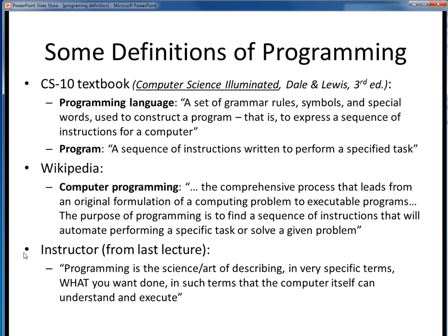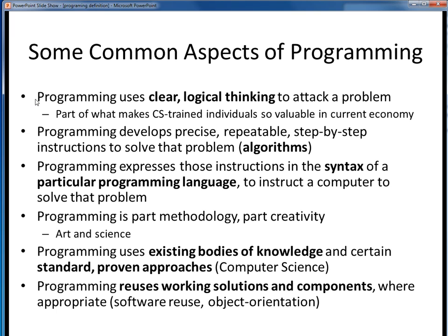So there are a couple different takes on defining programming, but in different words they are all dancing around a similar set of ideas. Here are some common themes that seem to run throughout programming. Programming is all about using clear, logical thinking to solve some problem. Alongside that is the idea that programming is all about breaking up a big problem into smaller problems to solve. The ability to wield this kind of problem-solving skill is part of what makes computer science individuals so valuable in our modern economy, because not everyone is able to do this. Programming has a lot to do with describing the solution to a problem in terms of precise, repeatable, step-by-step instructions — or what's referred to in CS as algorithms.